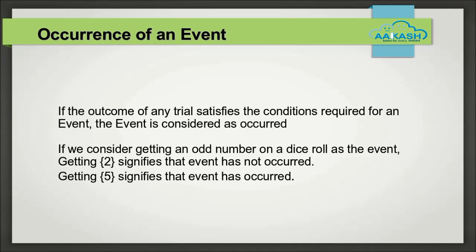Now, when do we say that some event has occurred? If the outcome of any trial satisfies the conditions required for it to become a part of the event, it is said that the event has occurred. For example, if we are looking for the probability of getting an odd number on a rolling die, getting 2 or 4 or 6 will signify that the event has not occurred, and getting any of the numbers 1, 3, and 5 will signify that the event has occurred.